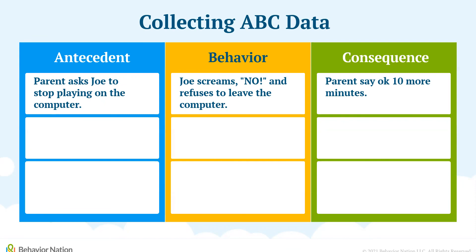Katie's mother talking on the phone is the antecedent. Katie throwing her toys across the room is the behavior. And the consequence is mother shouts, no throwing, Katie — and Katie continues to throw the toys.